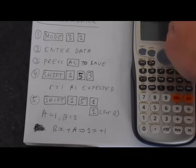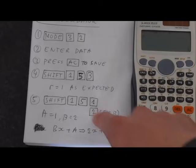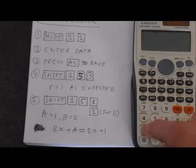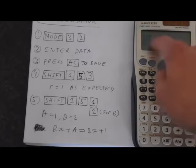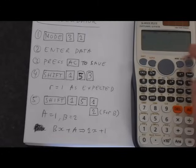We're going to do the same thing for B, for the line. We're going to press Shift, 1, then 5, so we're in the regression menu. We want to find A. A equals 1, as we expected.